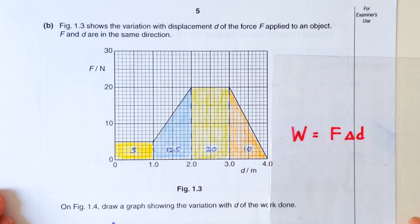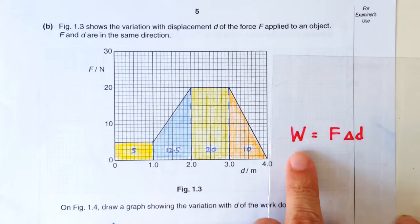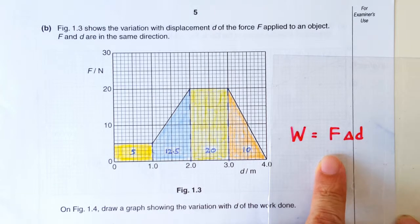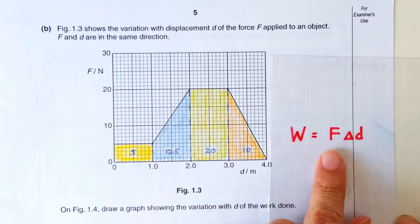Okay, so how do we calculate work done? Work done is F times delta S, right? So if the force is constant, then it's just a very simple product.